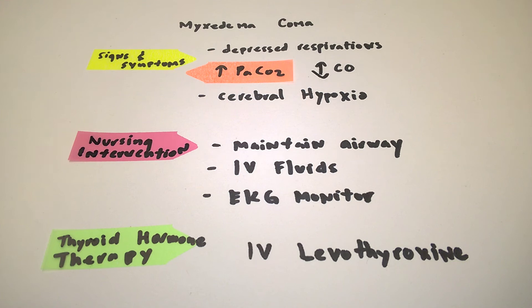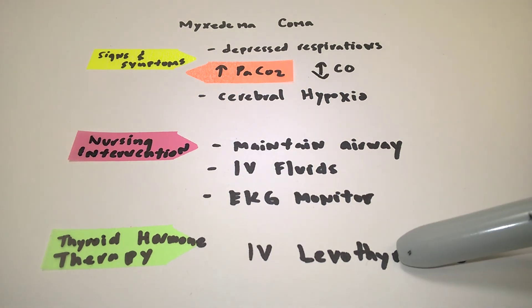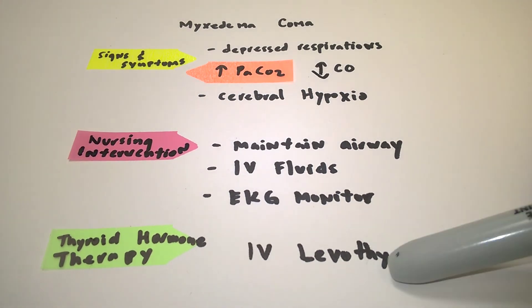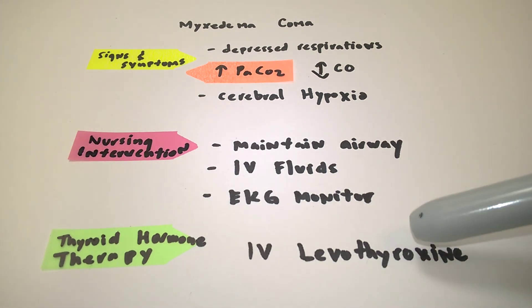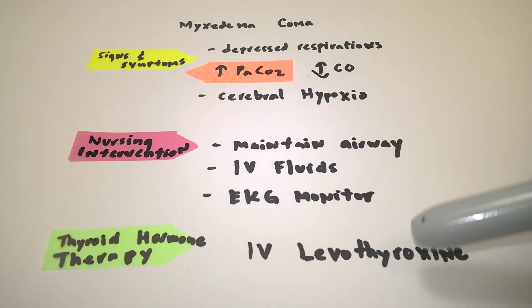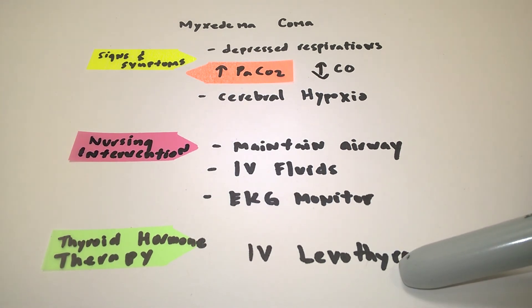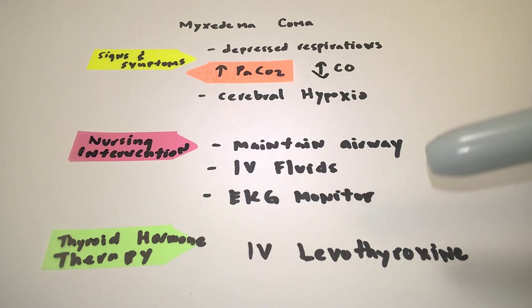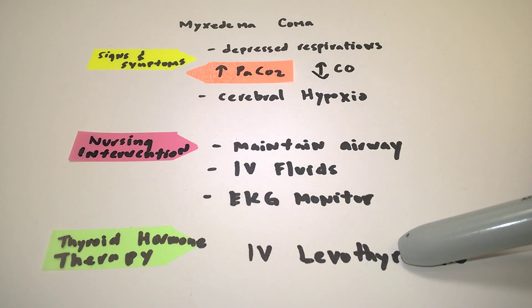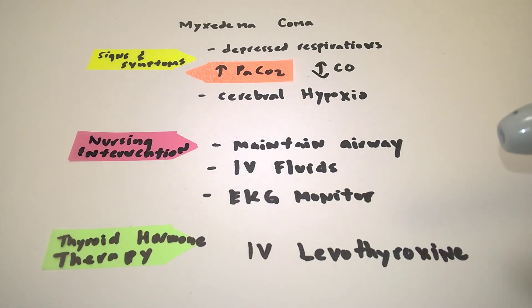There are a few things you have to know while giving Synthroid. We do have to take note that the client is at risk for cardiac complications if the metabolic rate is increased too quickly. Therefore, we do have to monitor the cardiac system, since the patient could be cardiovascularly compromised. The symptoms for that are palpitations, shortness of breath, chest pains, and also tachycardia or rapid heart rate.